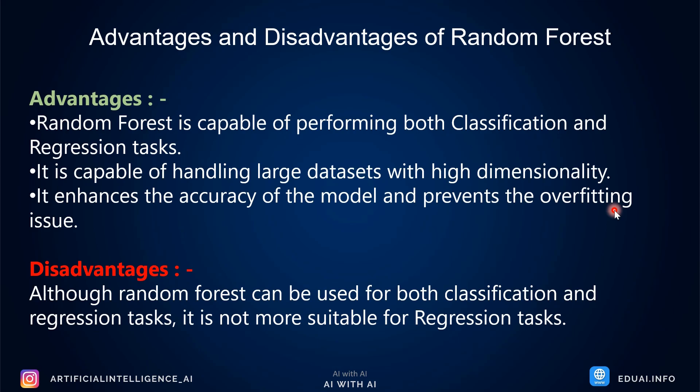In the case of random forest, overfitting will not happen because you are creating multiple decision trees and taking the majority vote across all of them, which prevents the overfitting issue. So one clear difference: random forest prevents overfitting whereas decision tree has a tendency to overfit. The one disadvantage of random forest is that although it works in both classification and regression, it is not really suitable for regression tasks — it works best in classification.